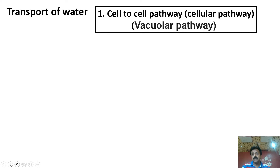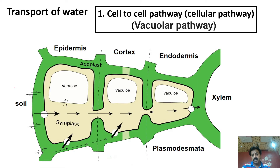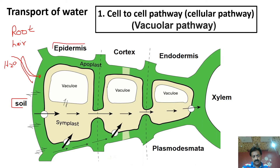Cell-to-cell/vacuolar pathway میں soil کے solution سے پانی root hair سے اندر آئے گا۔ پانی پہلے sail wall کو cross کرے گا epidermis کے cells کا، پھر plasma membrane کو cross کرتا ہوا cytoplasm میں پہنچے گا، پھر vacuole کے tonoplast کو cross کرے گا اور central vacuole میں آئے گا۔